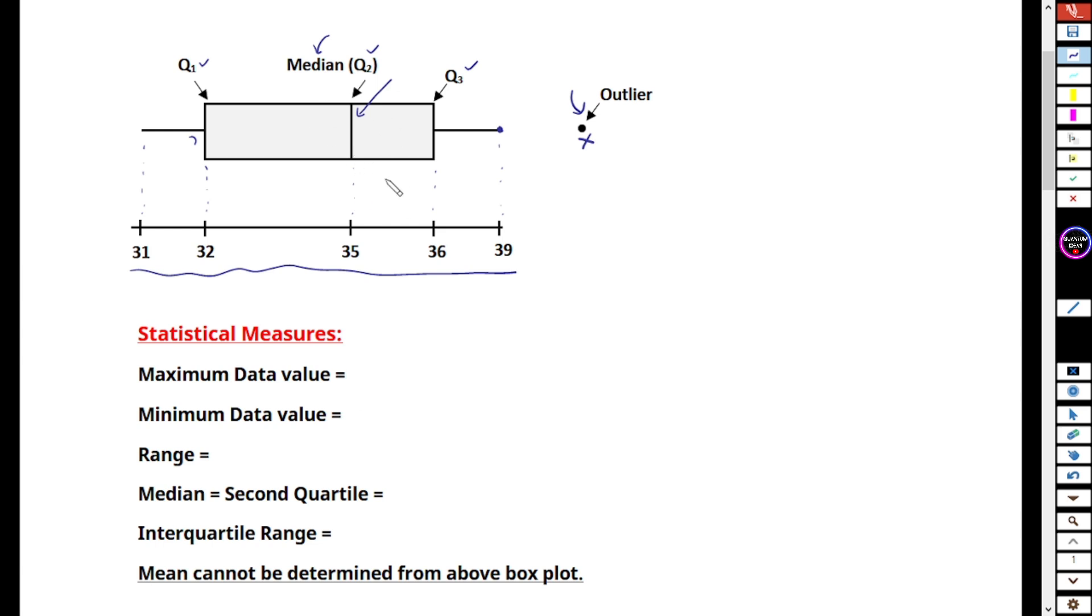What is the maximum data value? You can see here the end of this bar, this is the maximum data set or the data value, that is 39. And minimum data value is from here, you can see that is 31.